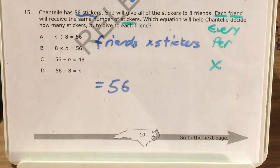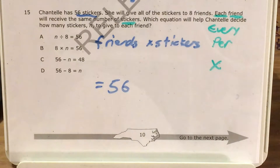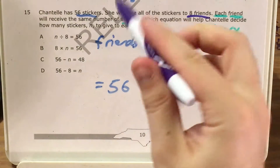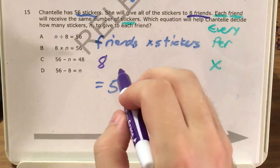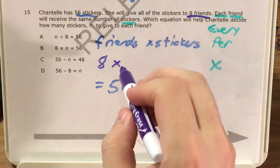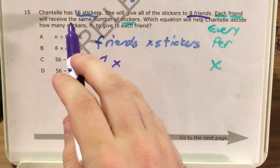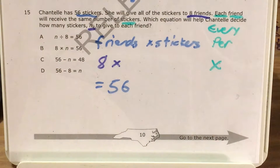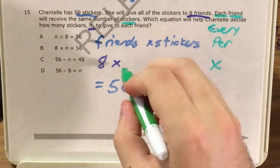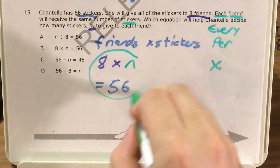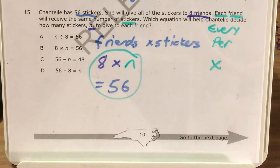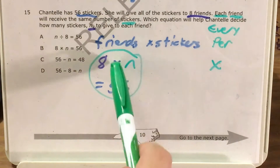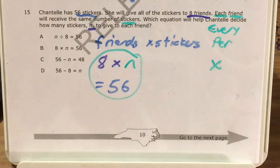Now to fill in some of that information: we know that Chantel has eight friends, so I can replace 'friends' with the number eight. This is going to be multiplied by how many stickers — n. Since n is the number of stickers and we don't know what n is yet, this ends up looking like eight times n equals 56.